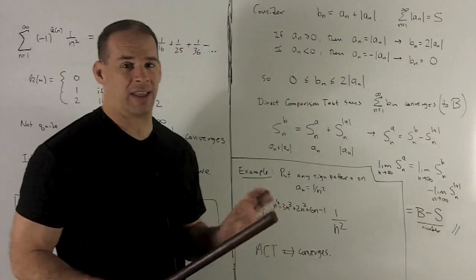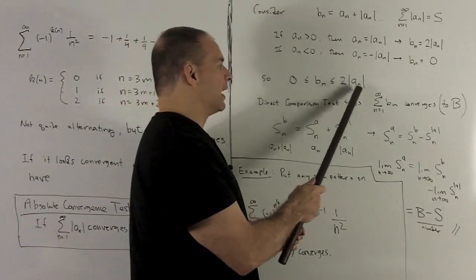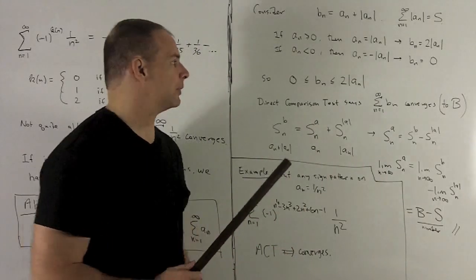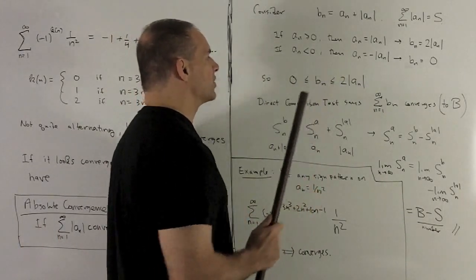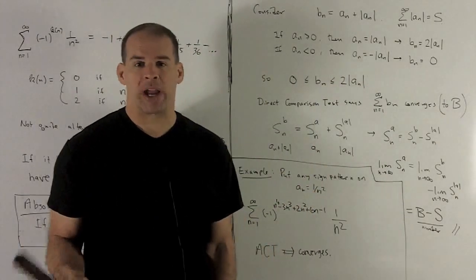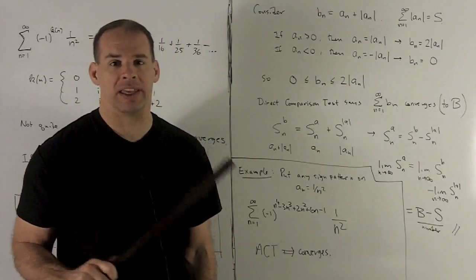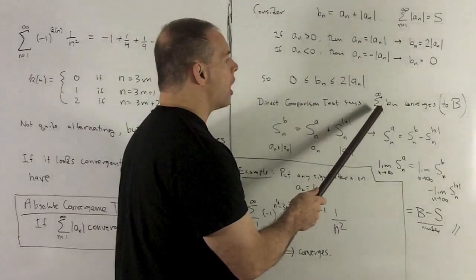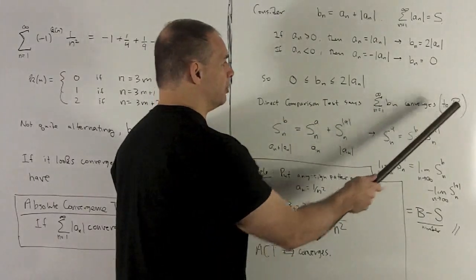And then this is just going to be two times the series for absolute value of a sub n. So I can pull the two out of the series, and then we know absolute value of a sub n, the series associated to that converges by assumption. So convergent series on the outside. So direct comparison test says the thing on the inside has to converge also as a series.